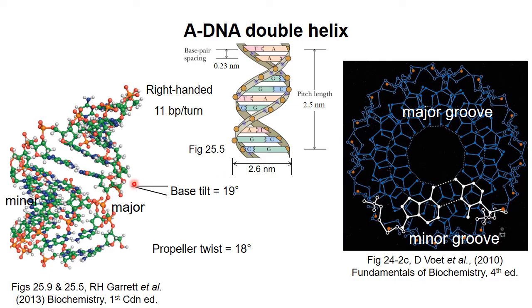So in the diagram on the left, the edges of the bases in the major groove are sort of in the center of the double helix. The bases are tilted much more than in a B-DNA double helix and there are 11 base pairs per turn. The diameter of the A-DNA double helix is wider than that of the B-DNA helix.